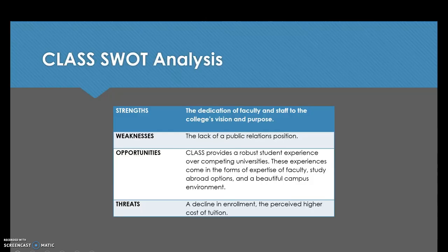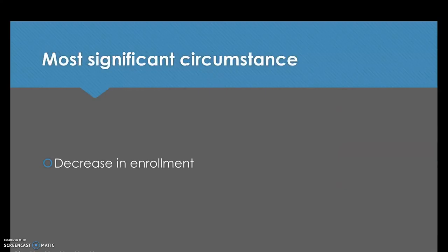Now we will focus on the situation analysis. The most commonly used tool for this is a SWOT analysis, which stands for strengths, weaknesses, opportunities, and threats. The CLASS strengths are the dedication of faculty and staff to the college's vision and purpose. The weakness is the lack of a public relations position. The opportunity is that CLASS provides a robust student experience over competing universities through faculty expertise, study abroad options, and a beautiful campus environment. The threats are a decline in enrollment and the perceived higher cost of tuition.